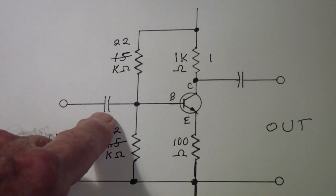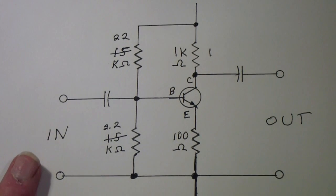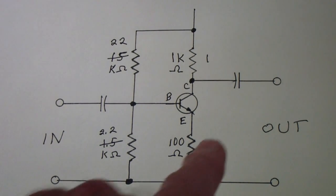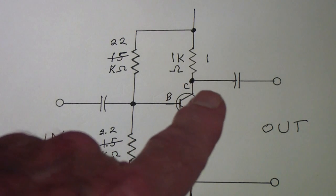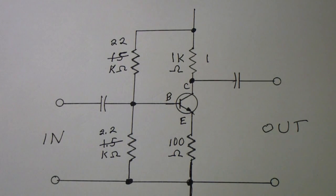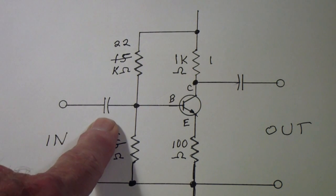I've also inserted capacitors at the input and output. I've done that for a couple of reasons. The one in the output is anticipating the idea of connecting this to another stage to get more gain. So we want to figure out how can we calculate a good value for this capacitor.